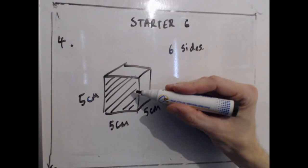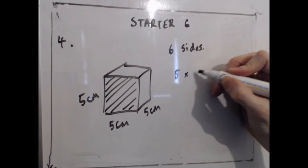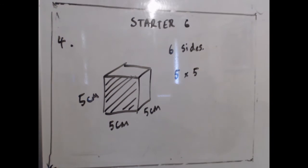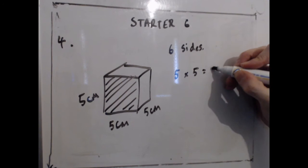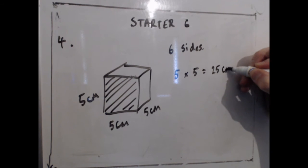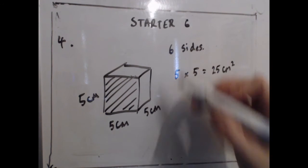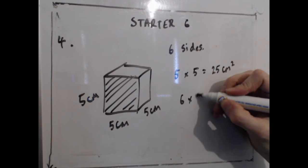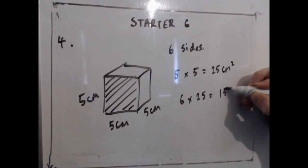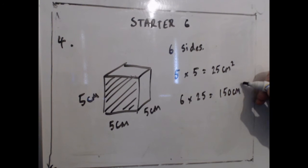And if I want to find the area of one of them, well the area of a square is just the side length multiplied by itself, 5 times 5 gives me 25 cm squared, and if I've got 6 sides I need to do 6 lots of 25, and that gives me 150 cm squared for the surface area.